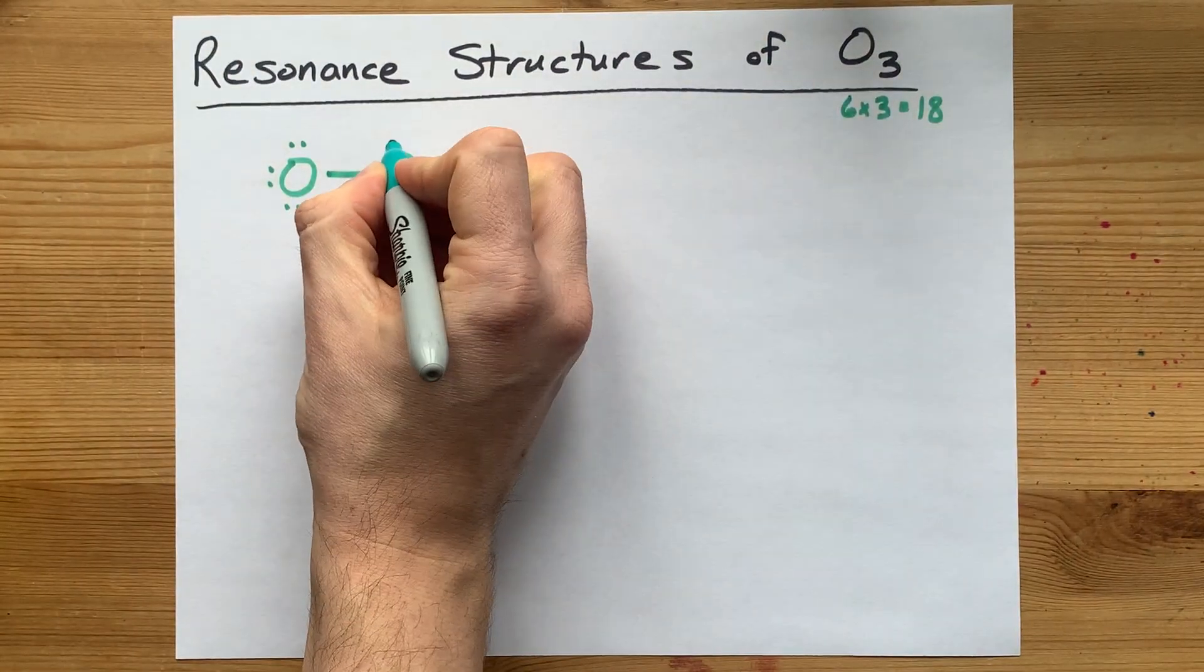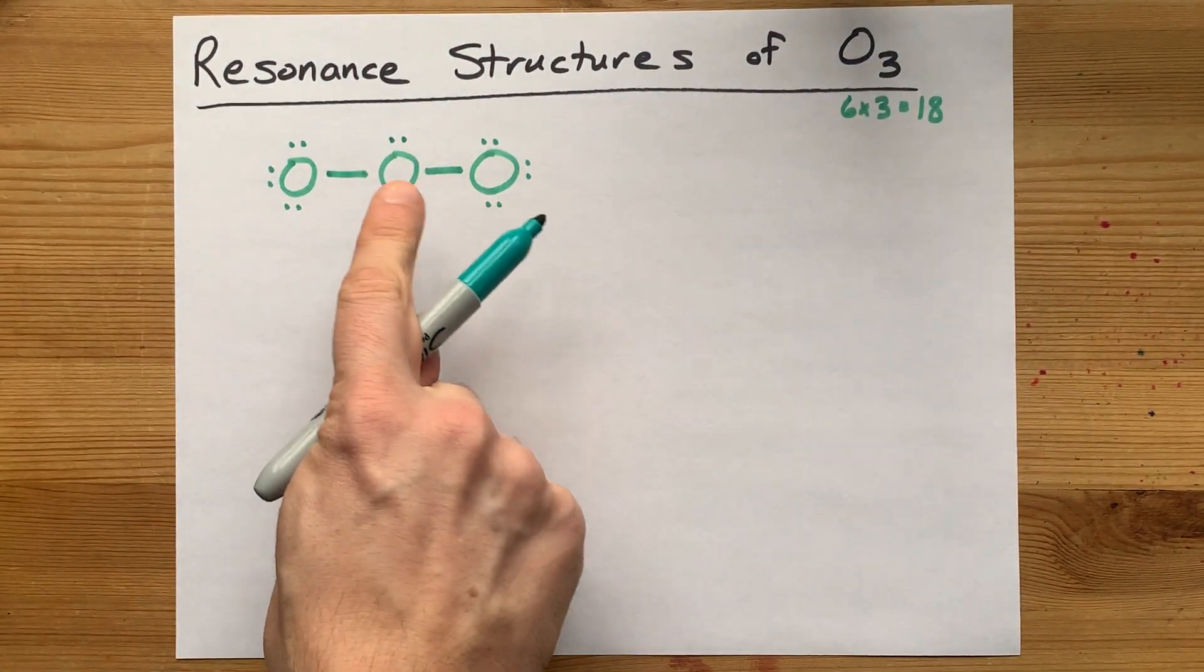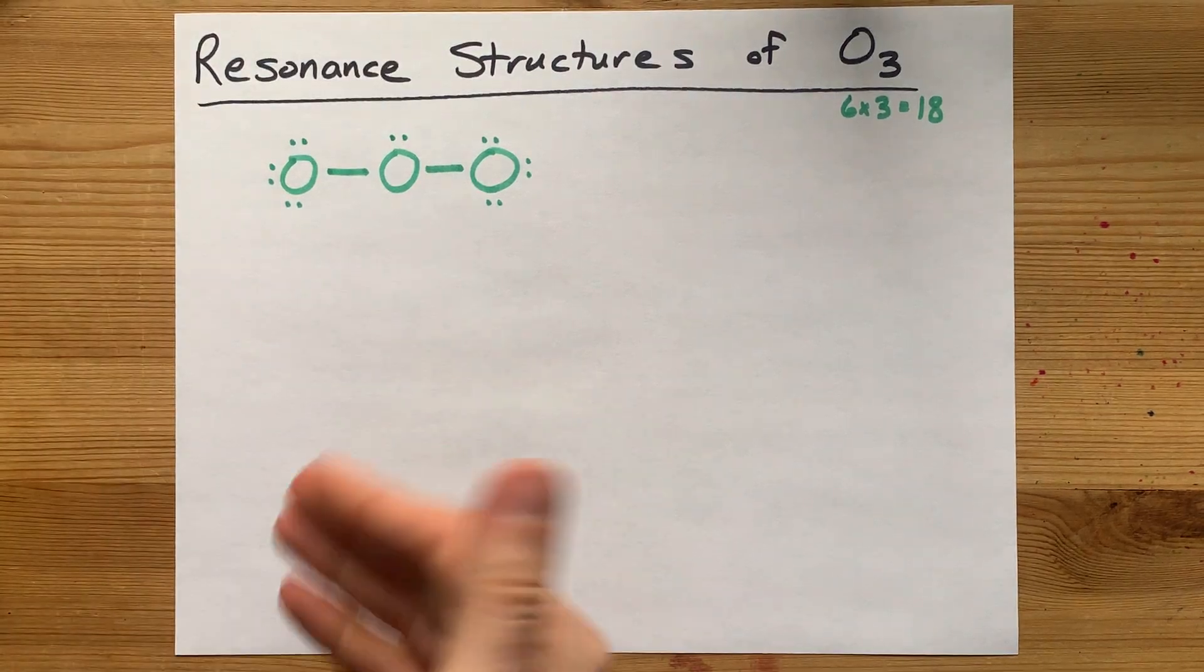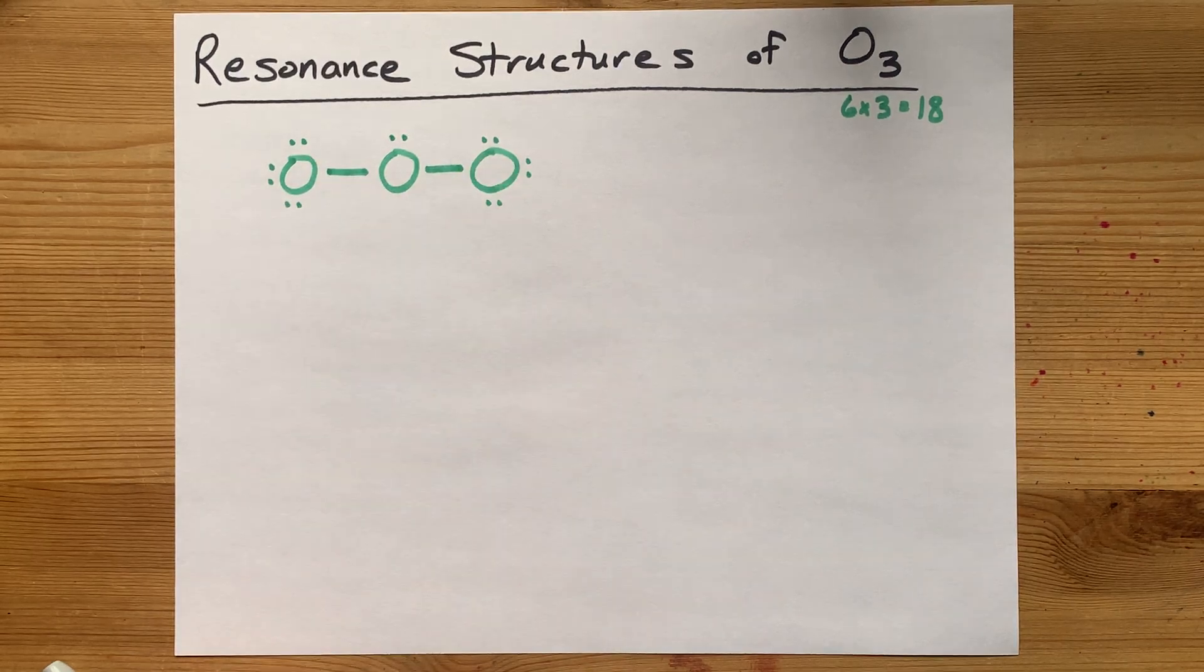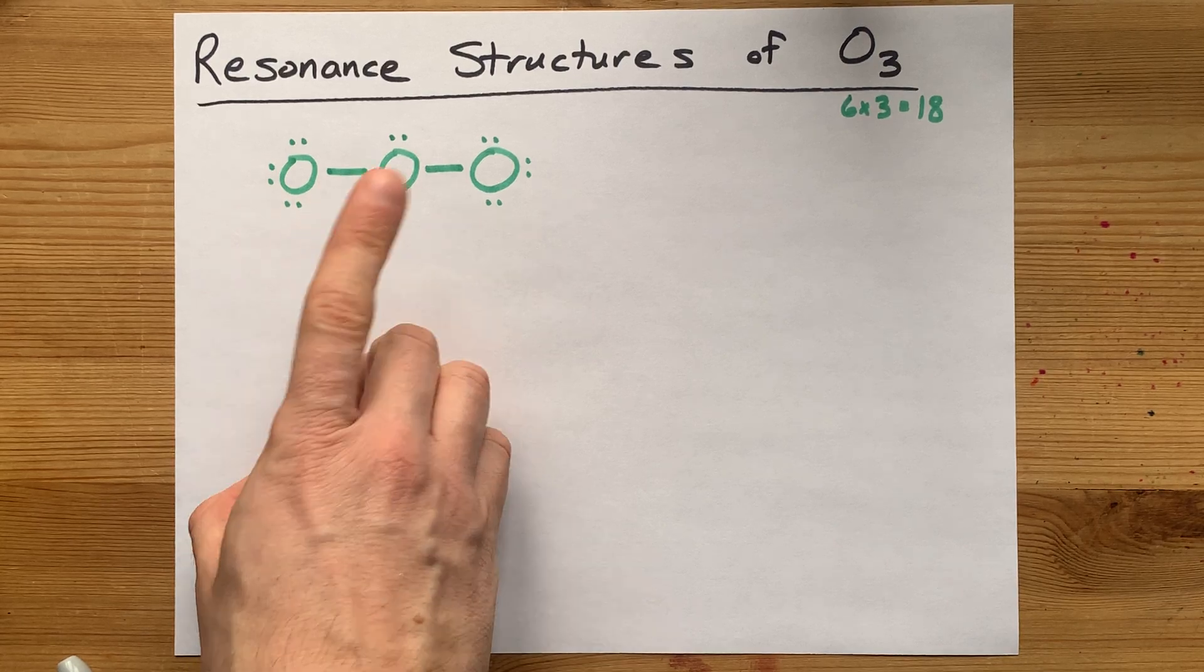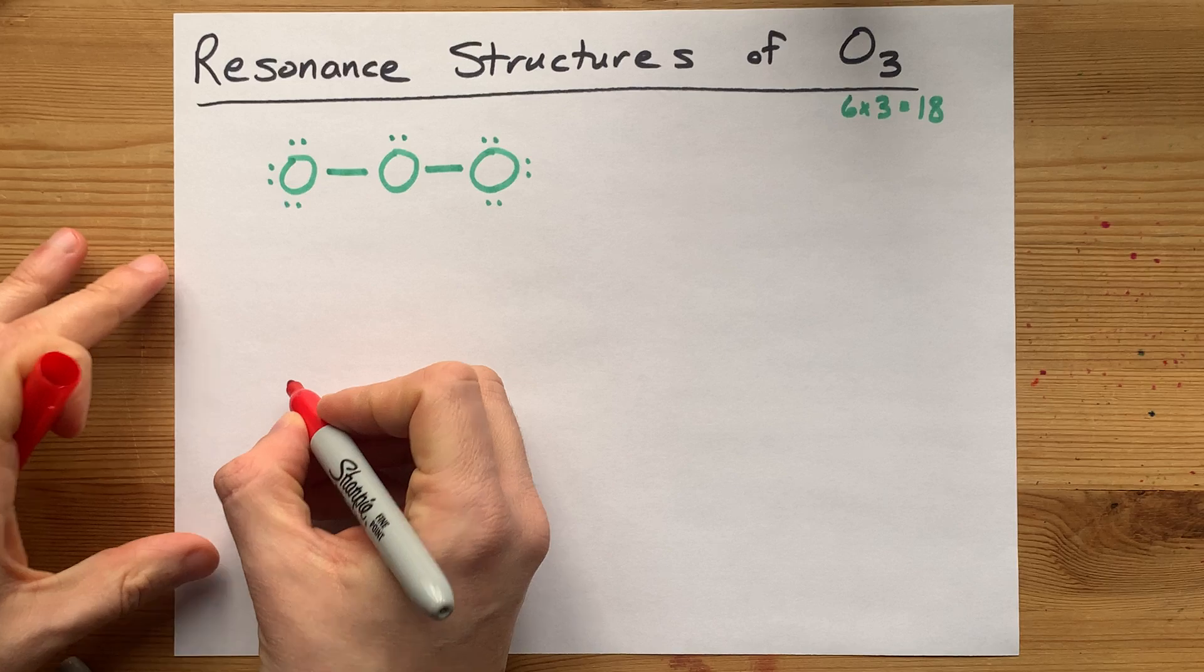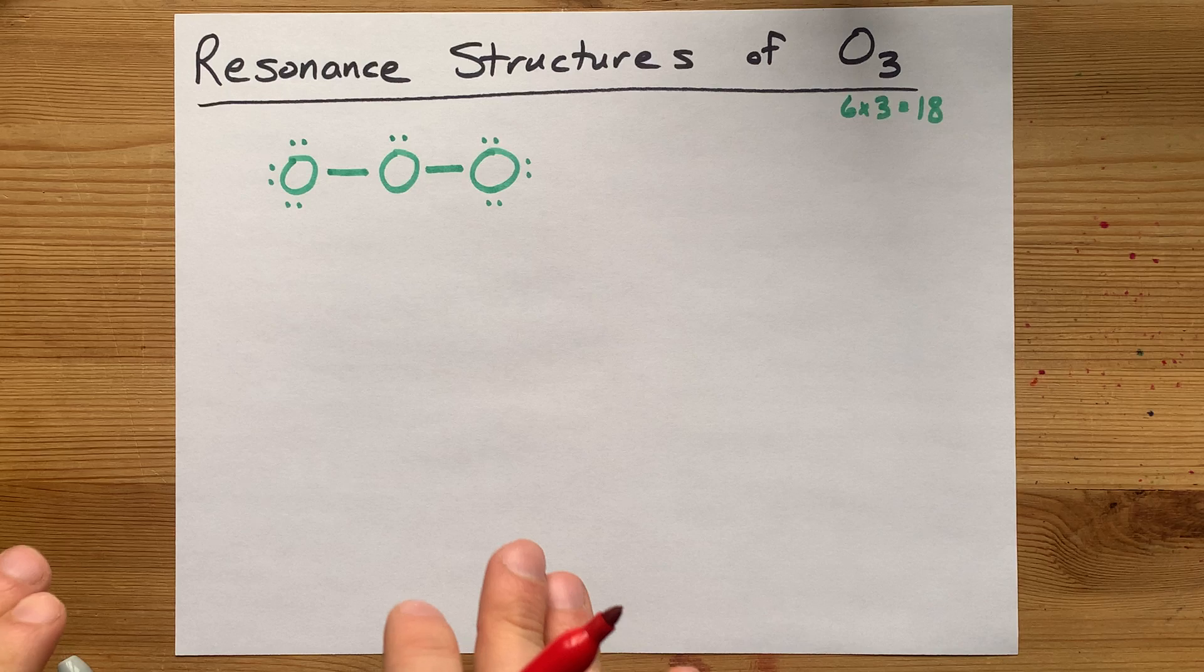This is not the complete Lewis structure because this oxygen only has six electrons around it. The fact that there are resonance structures here comes from the fact that this oxygen needs two more electrons to be stable. But does it get those two electrons from the oxygen on the left or the oxygen on the right? The answer is it's complicated. And in terms of Lewis structures, you have to draw it in both ways. And each of those ways is a resonance structure.